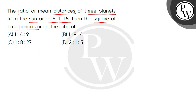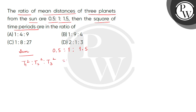So children, given that we have 3 planets and the distances from the sun are 0.5 : 1 : 1.5. We can see that the distance is increasing. We have to find the ratio of the squares of time periods — T1² : T2² : T3².